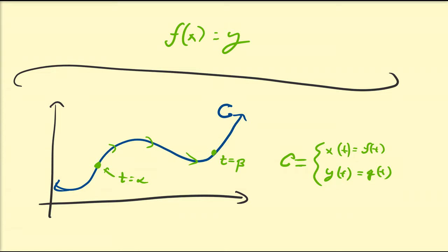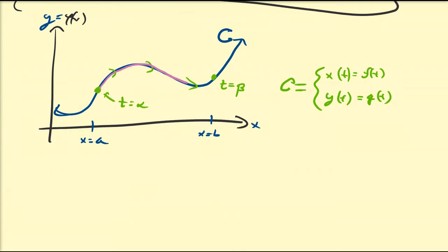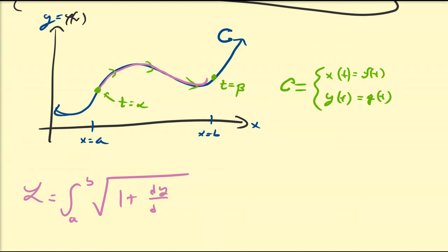We're going to assume this is a function of x, so this corresponds to x equal to a and x equal to b on the x-axis and y-axis, where y equals, say, 5x. So we already know how to find the arc length of this curve in Cartesian form: the arc length equals the integral from a to b of the square root of 1 plus dy/dx squared, dx.